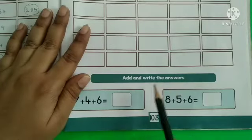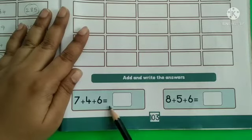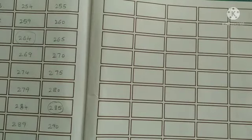Move to next main. Add and write the answers. Here also, they have given 3 numbers. Add these numbers and write the answers in the given space. Dear parents, help your children to complete these activities. Thank you.